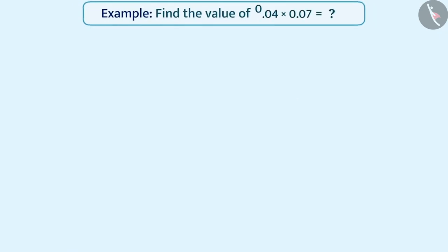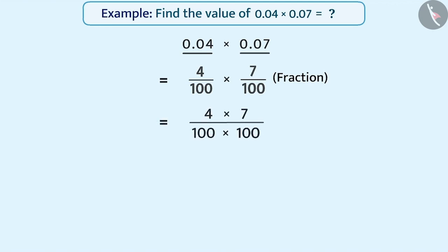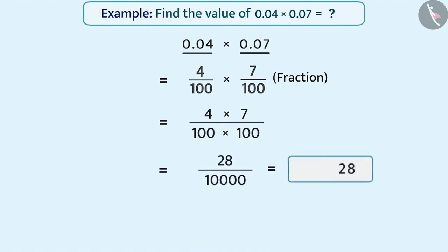Next example: find the value of 0.04 multiplied by 0.07. Let's solve this by converting it into fractions. 0.04 is equal to 4 by 100 and 0.07 is equal to 7 by 100. So 0.04 multiplied by 0.07 is equal to 4 by 100 multiplied by 7 by 100, which equals 4 multiplied by 7, divided by 100 multiplied by 100, which equals 28 by 10,000.